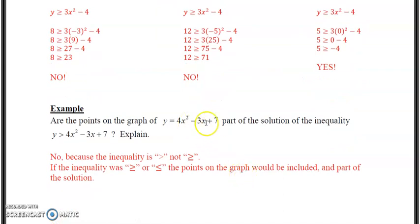Example: Are the points on the graph y equals 4x squared minus 3x plus 7 part of the solution in the inequality y? So think about that for a minute. So are all the points on this graph included in this? No, because of this simple sign here of greater than. If it was greater than or equal to or less than or equal to, then it would be the case. Remember, the solution to this equation, quadratic equation, is only the values that lie directly on the curve.